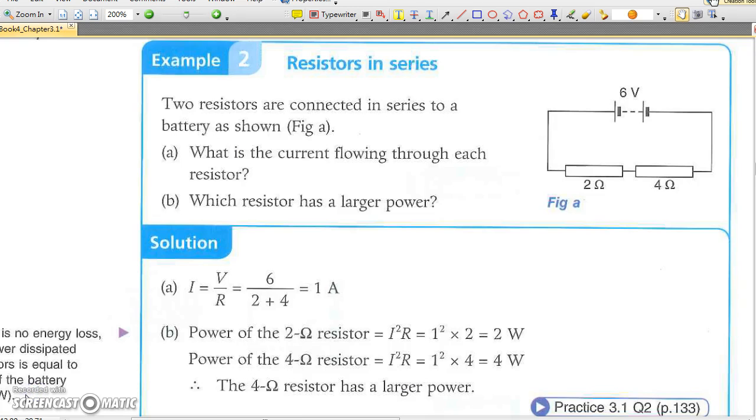In example 2, two resistors are connected in series. One has a larger resistance. Which one will produce a larger power? As the same current pass through the two resistors, the one with a larger resistance will produce a larger power as power equals I square R for the common current I.